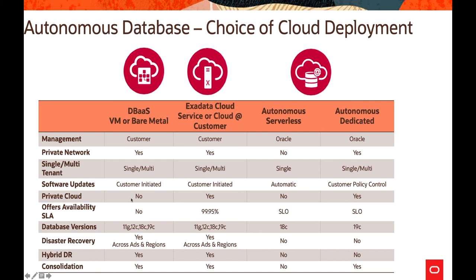Private cloud is not available in cloud at customer offerings for VM or bare metal, but Exadata deployments are available in Cloud at Customer behind the customer's own firewall. Autonomous serverless is not available on Cloud at Customer, but dedicated is available on Exadata Cloud at Customer. In terms of database version support, DBaaS and Exadata-related cloud services support multiple database versions, whereas serverless and autonomous dedicated only support 19c. Disaster recovery across availability domains and regions is possible for automated services, but at the moment DR is not available for serverless or dedicated. Hybrid DR can be created on DBaaS bare metal, VMs, or Exadata, but not for autonomous serverless or dedicated.